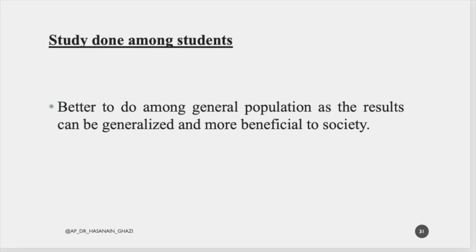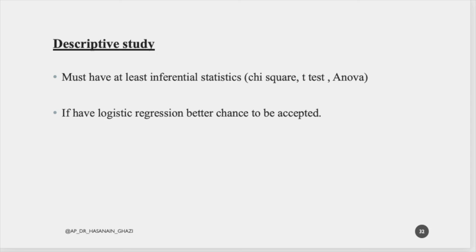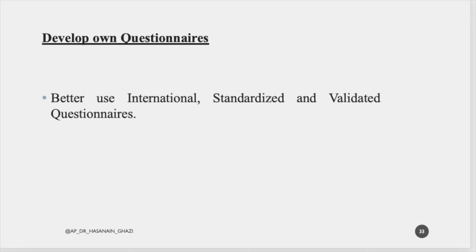Avoid studies done only among students — journals are no longer interested because millions of student-based papers have been published and it is just a specific group. Research among the general population in society, like at shopping malls, has a higher publication chance as it is more beneficial to society. Descriptive studies with only frequency and percentage are not sufficient — at least use inferential statistics like Chi-square or ANOVA. Avoid developing your own questionnaire unless it is a validation study; better to use an internationally standardized and validated questionnaire, as it increases acceptance probability.